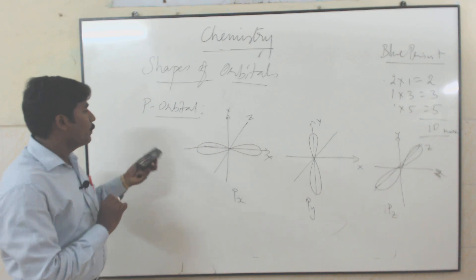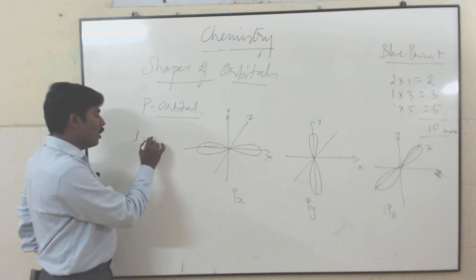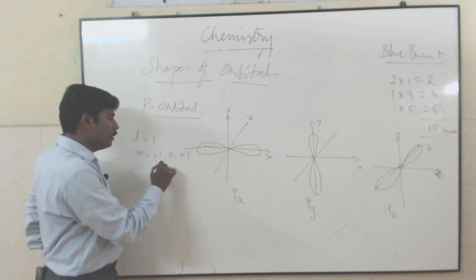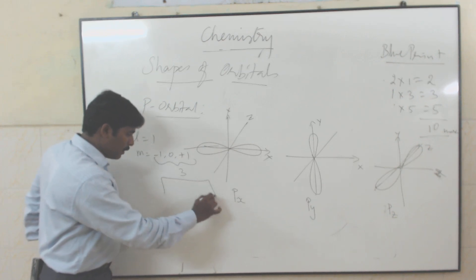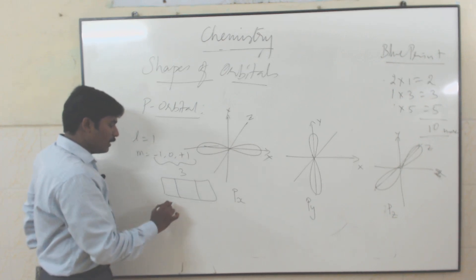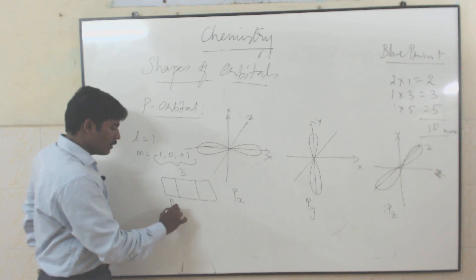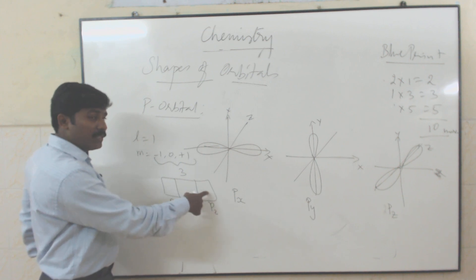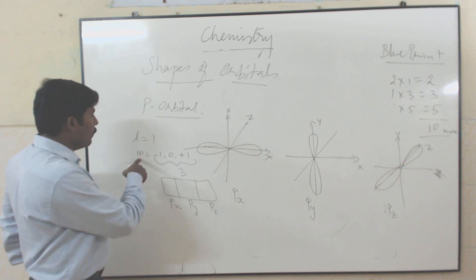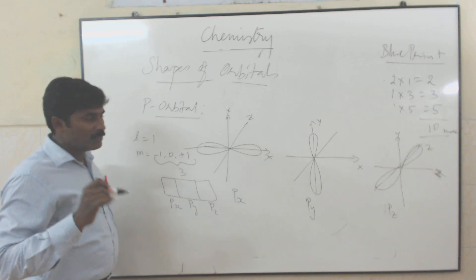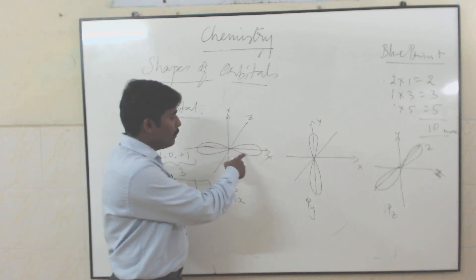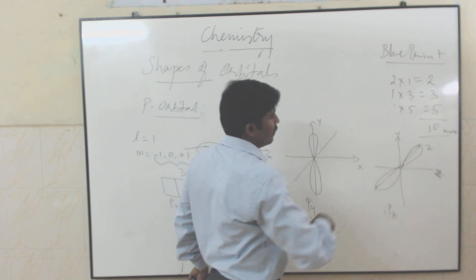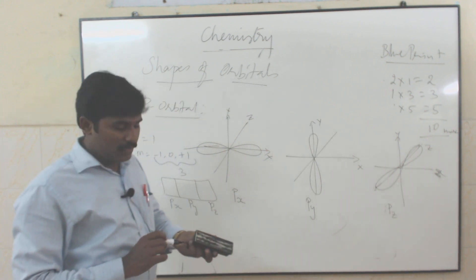For p orbital, l value is equal to 1, m value is equal to minus 1, 0, plus 1 — so 3 orientations. The p orbital splits into 3 types: px, py, pz. Each orbital holds 2 electrons, so p orbital can hold a maximum of 6 electrons. The shape is dumbbell shape — along x means 2px, along y means 2py, along z axis means 2pz.